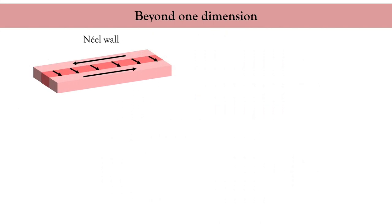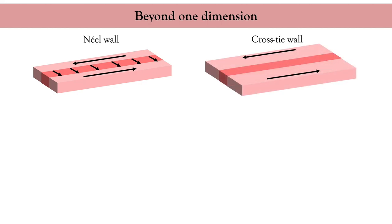Let's look at another interesting magnetic texture that appears in two dimensions. I'll consider first an in-plane magnetized sample with a Néel wall along the length of the wire, which happens if the shape anisotropy is large. This configuration requires a very long Néel wall which is unlikely to be stable for large samples. Indeed, when the width of the sample increases, you obtain what is called a cross-tie domain wall.